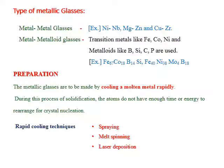The second type is metal-metalloid metallic glasses, where metal elements such as iron, cobalt, and nickel are mixed with metalloid elements such as boron, silicon, carbon, and phosphorus to produce this class of metallic glasses. The preparation of metallic glasses is achieved by the key process of rapid cooling.